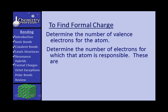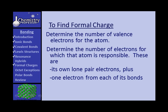What do I mean by electrons that an atom is responsible for? An atom is responsible for its own lone pair electrons, plus one electron from each one of its bonds. So you have to know the valence electrons for the atom, how many of those are lone pair electrons, and which ones are bonded — and you do that by finding the Lewis structure. To calculate the formal charge, you take the valence electrons and subtract from it the electrons for which it's responsible, and the result is the formal charge.